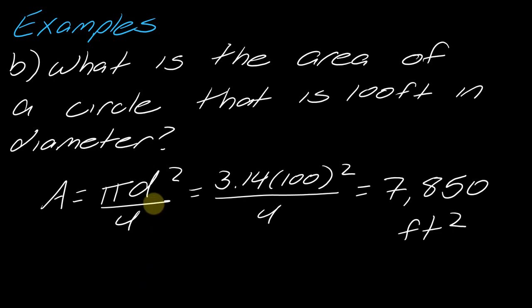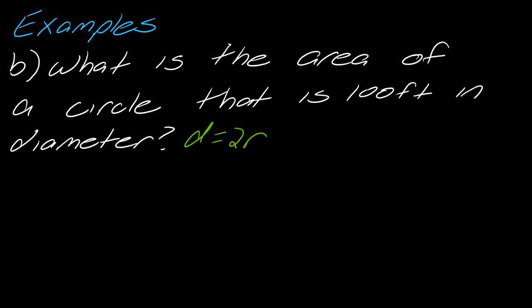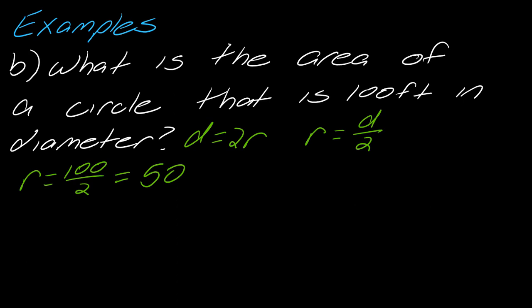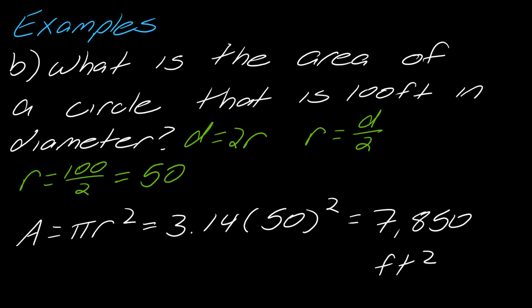For fun, let's try an alternative approach using the radius formula. The diameter is 100 feet, so the radius is 100 divided by 2, which is 50. Using pi·r squared: 3.14 times 50 squared gives the same answer. I actually prefer this formula because it's a simpler calculation. I just need a little extra work upfront to find the radius, but I get to the same answer. Try all your options when approaching a problem like this.